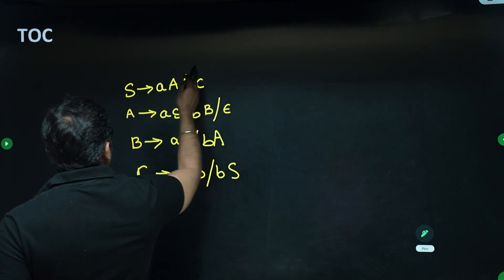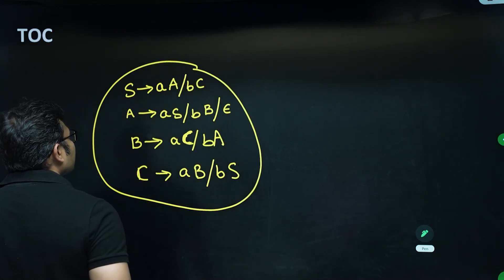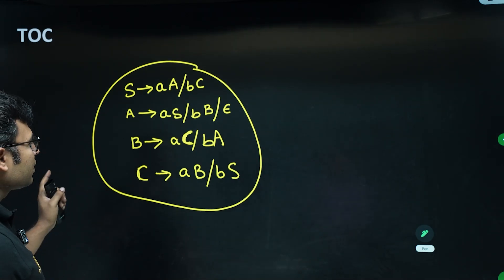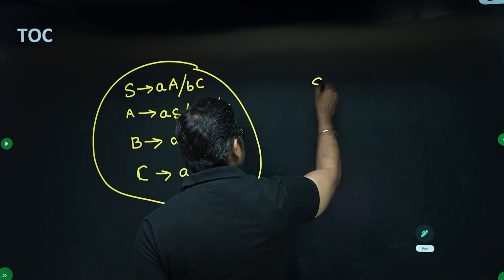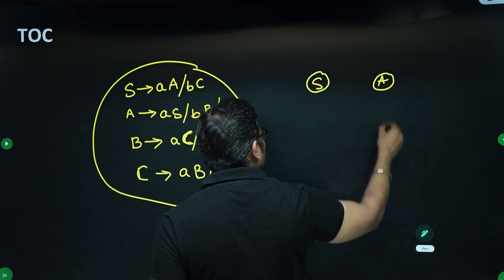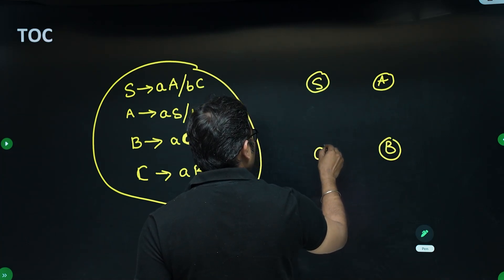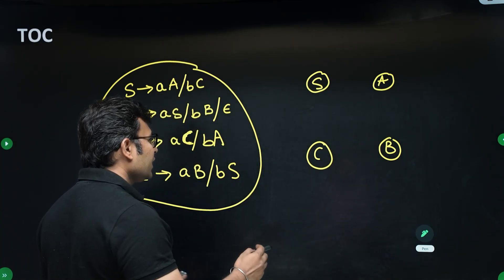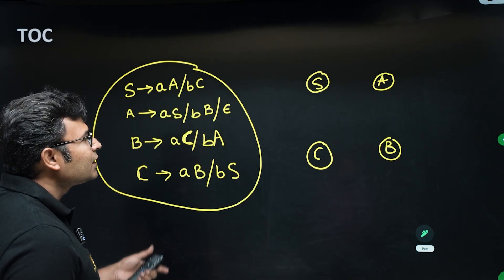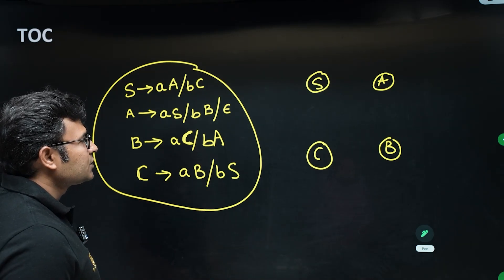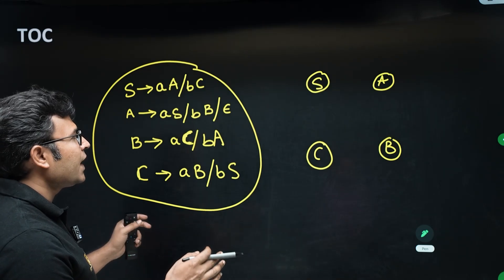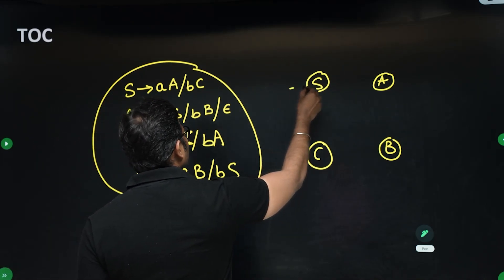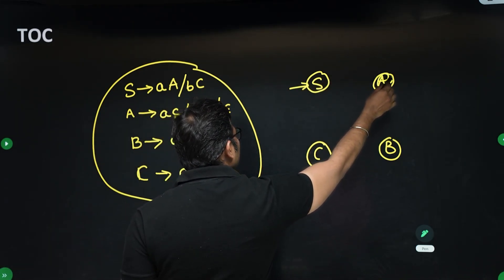In the exam if they give you this grammar, it is very difficult to answer directly. Luckily it is a right linear grammar which can be converted to a finite automata very easily. There are four states: S, A, B, and C. You can place them anywhere, but arranging them in a grid works out well. S is the starting state and A is the final state because A derives epsilon.